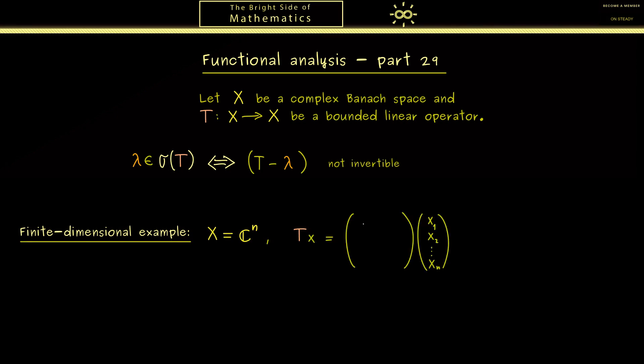Like the diagonal matrix with entries lambda 1, lambda 2 and so on on the diagonal. In other words the result of T is simply the vector lambda 1 x₁ until lambda n xₙ. And here you see immediately that the set lambda 1 to lambda n is exactly our spectrum of T.